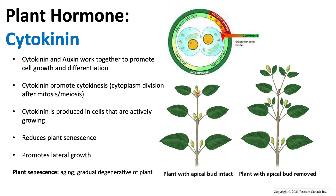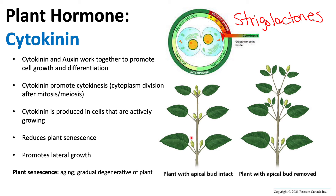As auxins move unidirectionally from top to bottom, they produce strigolactones. These strigolactones prevent lateral bud growth, so the buds are unable to grow laterally due to the auxin moving downward and promoting those strigolactones. Cytokinin, however, reduces the effect of the strigolactones, which allows lateral bud growth.